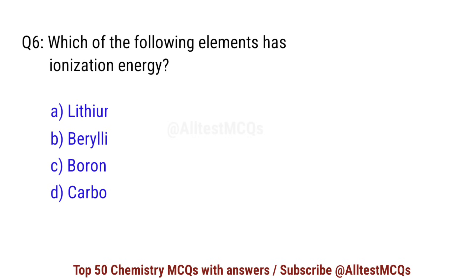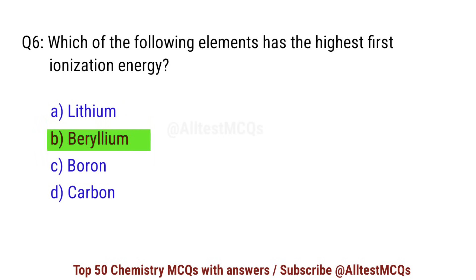Question number 6. Which of the following elements has the highest first ionization energy? Correct option is B: beryllium.